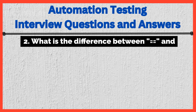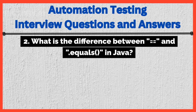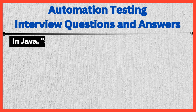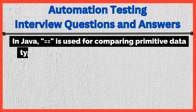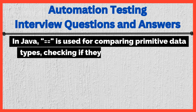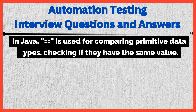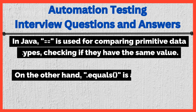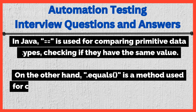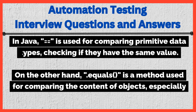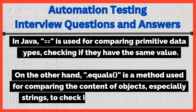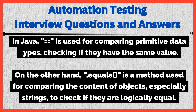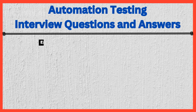What is the difference between == and .equals() in Java? In Java, == is used for comparing primitive data types, checking if they have the same value. On the other hand, .equals() is a method used for comparing the content of objects, especially strings, to check if they are logically equal.